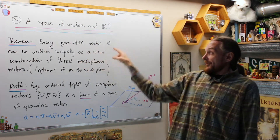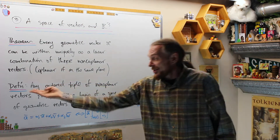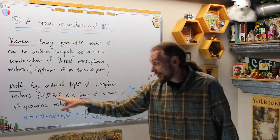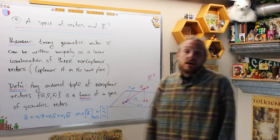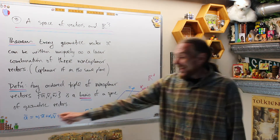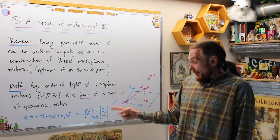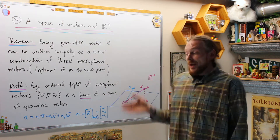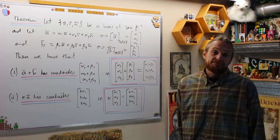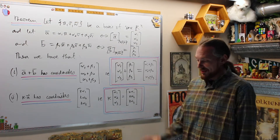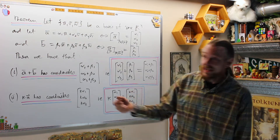The theorem guarantees that any vector A in three-space can always be uniquely written as a linear combination of three non-co-planar vectors. Therefore, that will be our definition of a basis: any ordered triple of three non-co-planar vectors U, V, and W is what we call a basis for the space of geometric vectors. Because I can write A as a linear combination of those three vectors, the coordinates of A in the basis U, V, W are the coefficients in that linear combination.